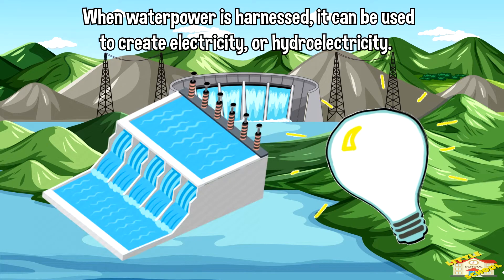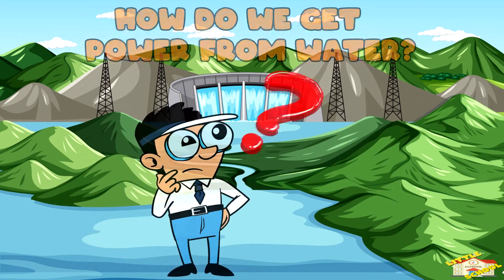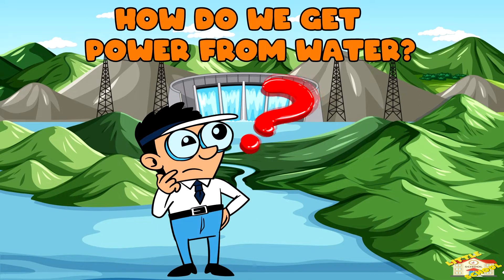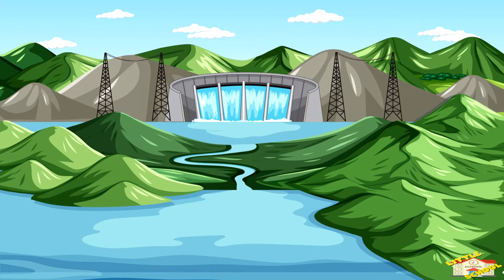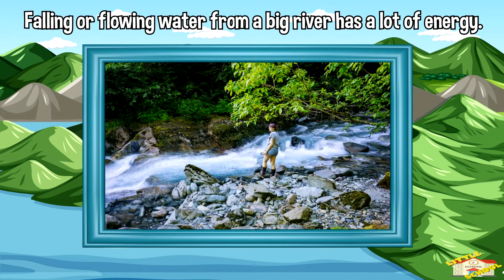When water power is harnessed, it can be used to create electricity, or hydroelectricity. How do we get power from water? Falling or flowing water from a big river has a lot of energy.